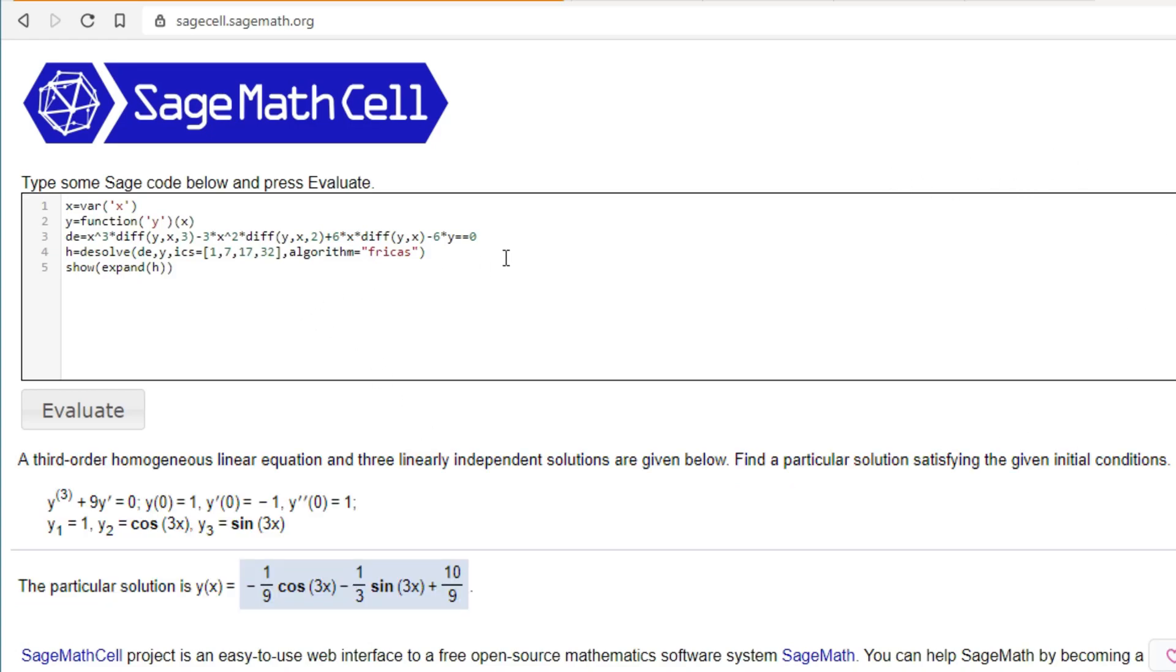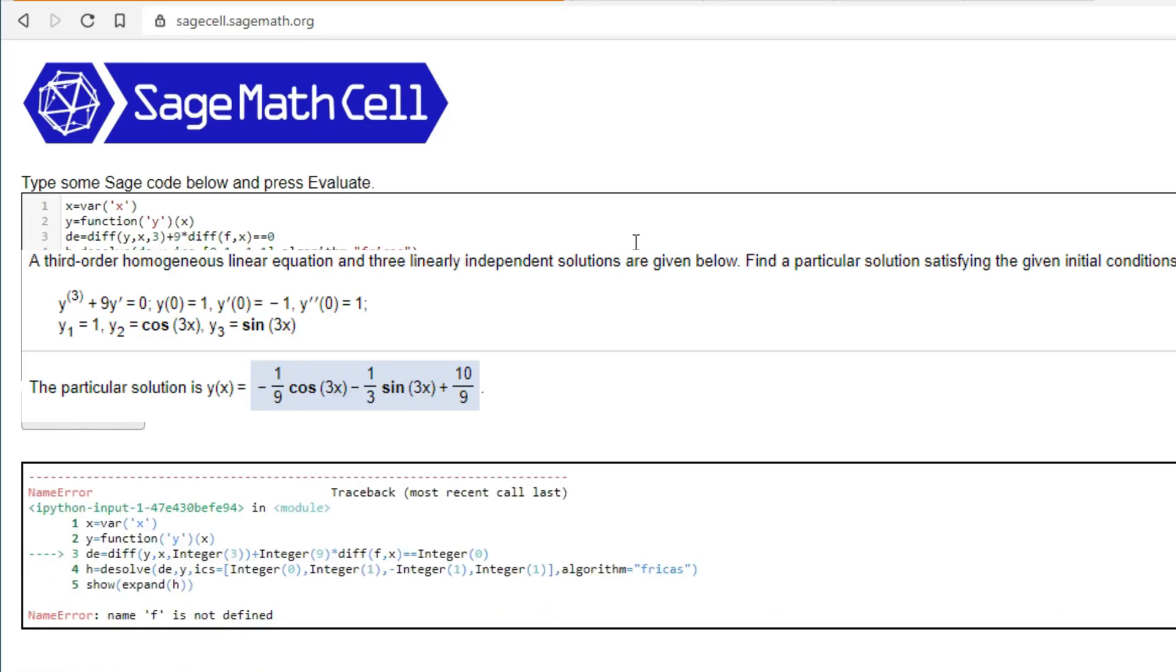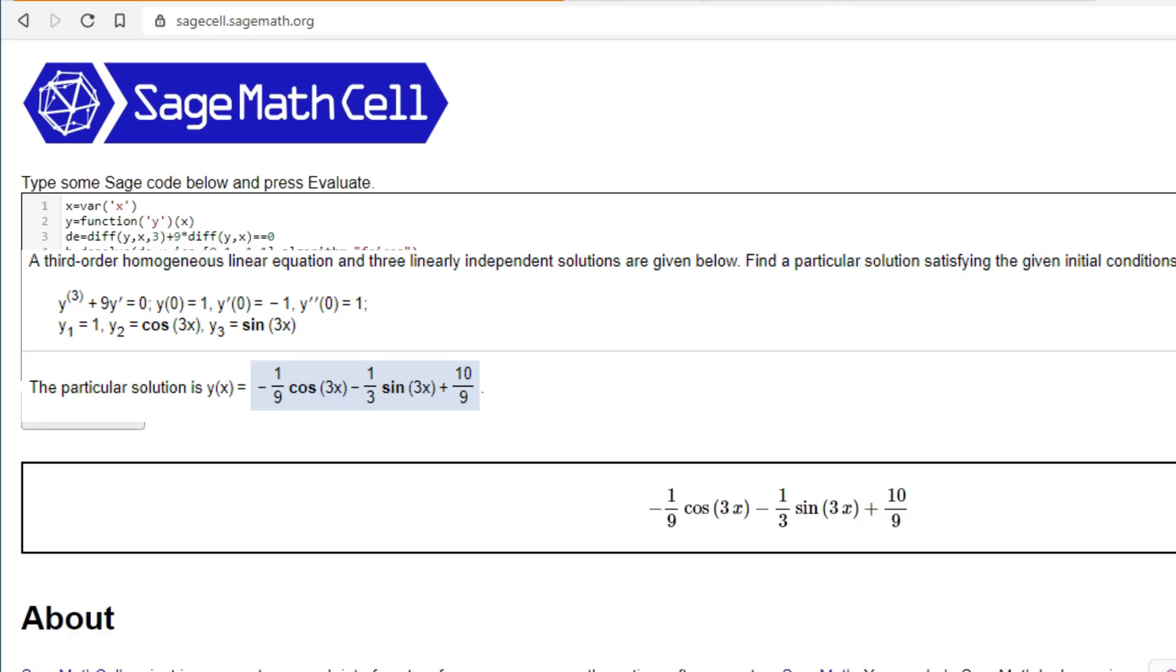Let's go on to another one. Sage makes it really easy to just hammer through homework problems. So we got the third order plus 9 times diff(f,x) equal to 0. And then at 0, it's 1, the derivative is negative 1, and the second derivative is 1. And then hit evaluate. And then there you go. You get the particular solution to that problem.